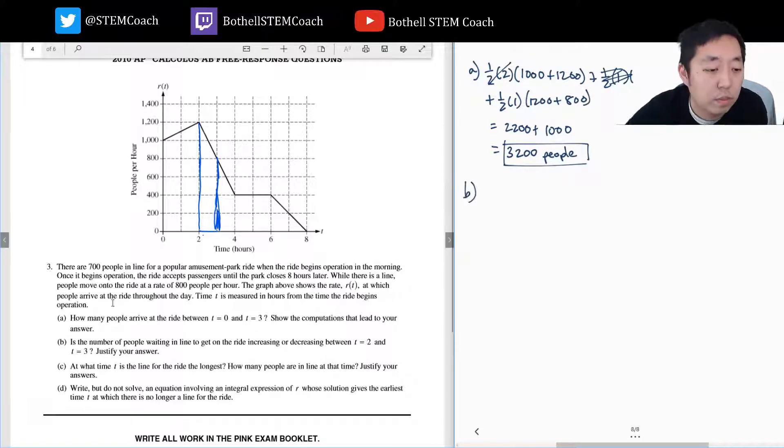Part b. Is the number of people waiting in line to get on the ride increasing or decreasing between two and three? Justify your answer.